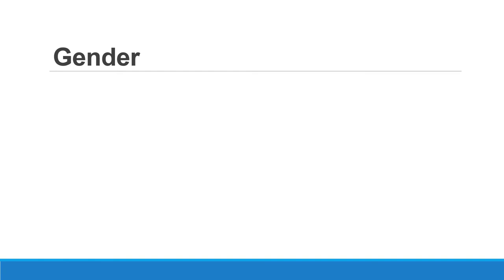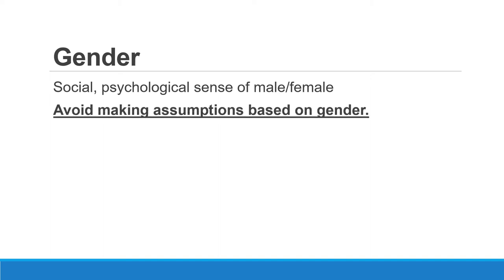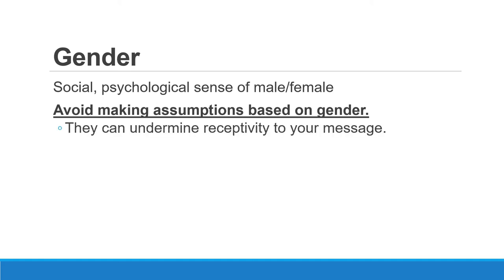You also need to consider gender, which encompasses the social and psychological sense of what makes a person male or female. There are certain things you need to be careful of — you need to avoid making assumptions based on a person's gender. Don't just assume because they are male or female that they feel a certain way, because if you make generalized assumptions, you will lose your audience and they will no longer be receptive to your message. Be culturally sensitive, and be sensitive regarding religion, politics, and gender as well.